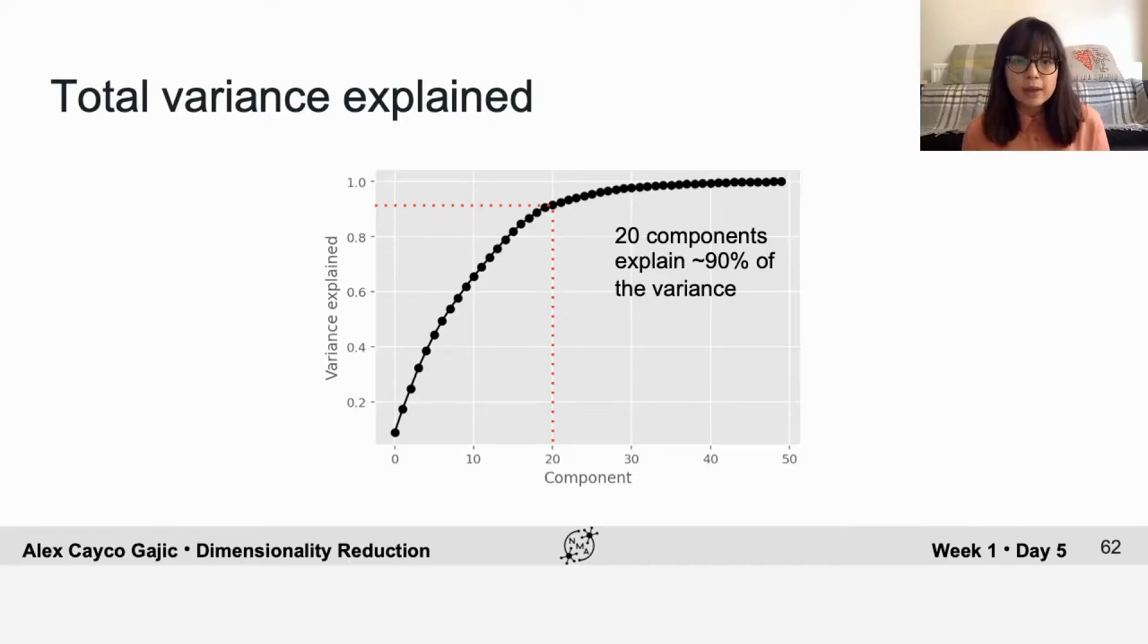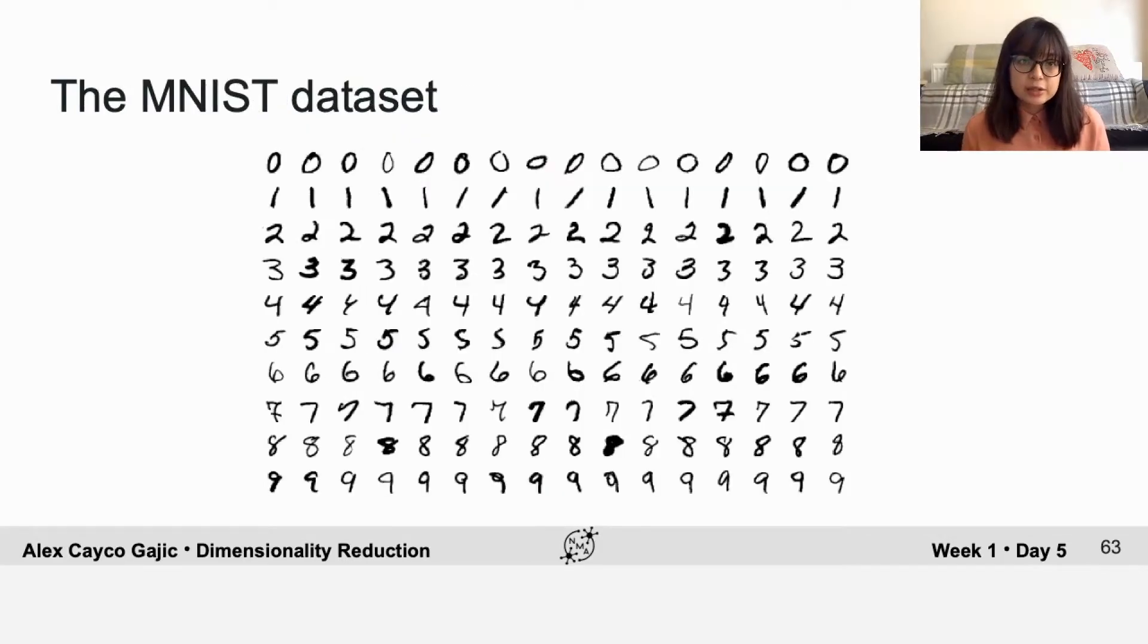This is a very common way to assess the intrinsic dimensionality in neuroscience. In this next exercise, you will use PCA to determine the intrinsic dimensionality of the MNIST dataset.